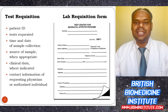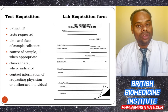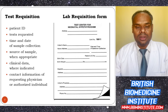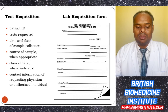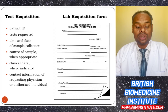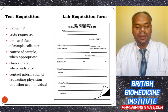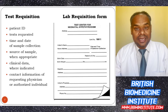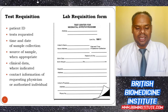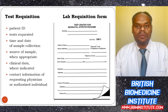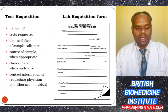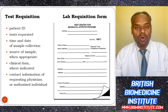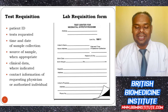In order to get the best result, we must fill the test requisition with the patient ID, test required, date and time of sample collection, source of sample where appropriate, clinical data where indicated, and contact information of the requesting physician or authorized individual. We have to fill the lab requisition form with correct details.